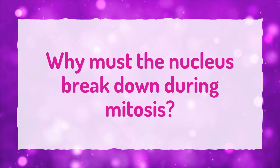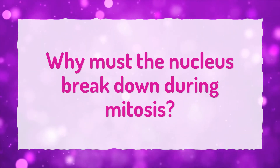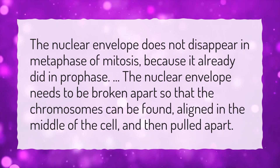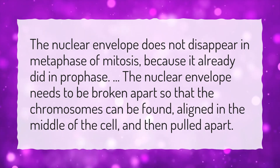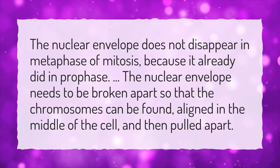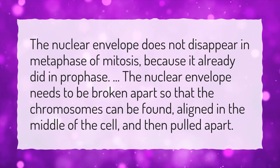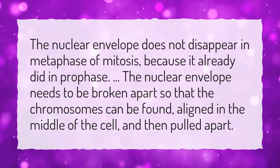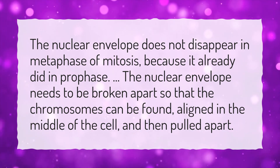Why must the nucleus break down during mitosis? The nuclear envelope does not disappear in metaphase of mitosis, because it already did in prophase. The nuclear envelope needs to be broken apart so that the chromosomes can be found, aligned in the middle of the cell, and then pulled apart.